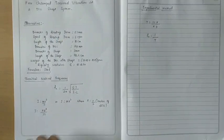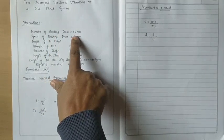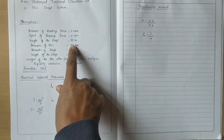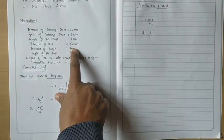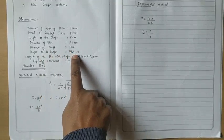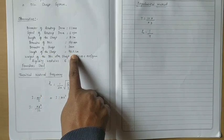Torsional vibration of a disk shaft system. Diameter of the drum is 62 mm. Speed of the drum is 6 rpm. Length of the shaft is 81 cm. Diameter of the disk is 190 mm. Diameter of the shaft is 3 mm. Length of the shaft is 92.5 cm.